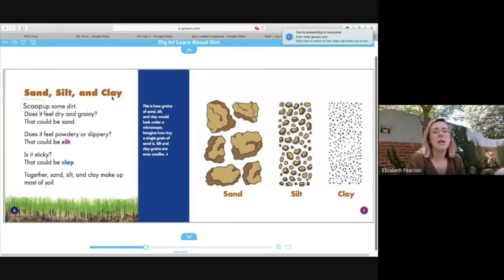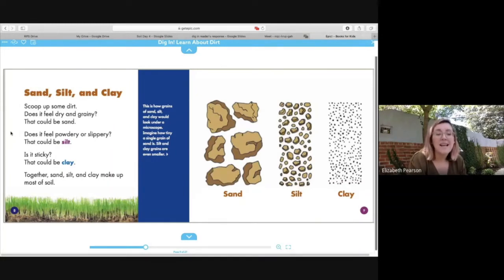Okay, next chapter says, sand, silt, and clay. Scoop up some dirt. Does it feel dry and grainy? That could be sand. So sand is dry and grainy. Does it feel powdery or slippery? That could be silt. Is it sticky? That could be clay. Together, sand, silt, and clay make up most of soil. So that was one of my questions. Before we read, I had a question about sand, silt, and clay. And here I can see the answer. So we'll remember that and we'll have to go back and add that to our graphic organizer. This is how grains of sand, silt, and clay would look under a microscope. Imagine how tiny a single grain of sand is. Silt and clay grains are even smaller.